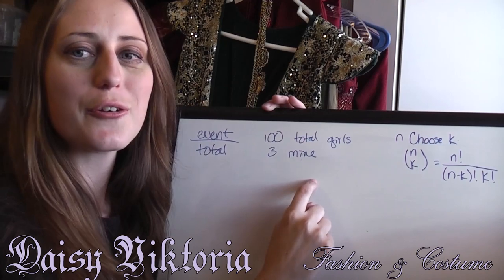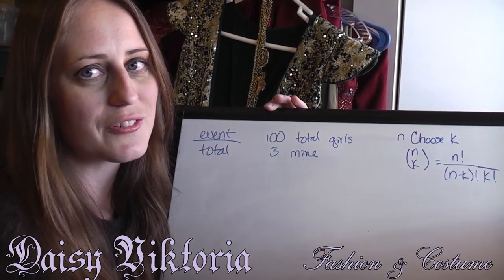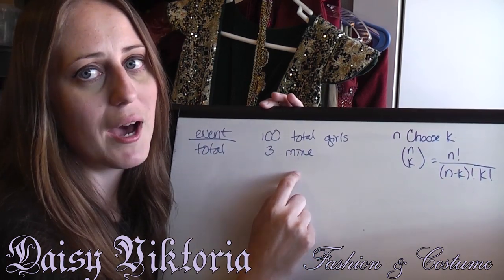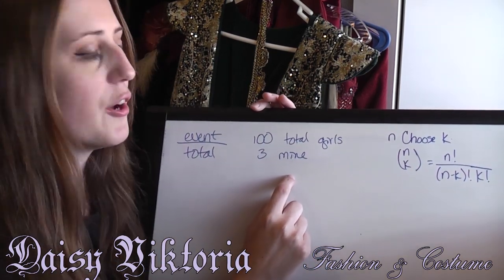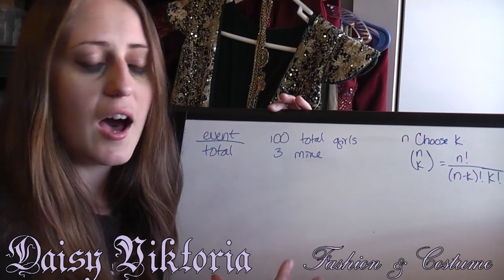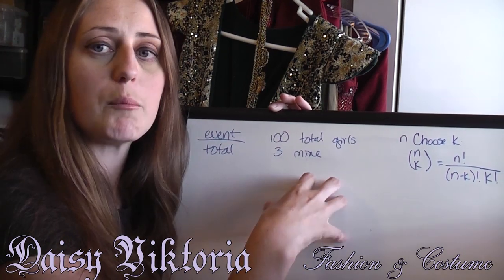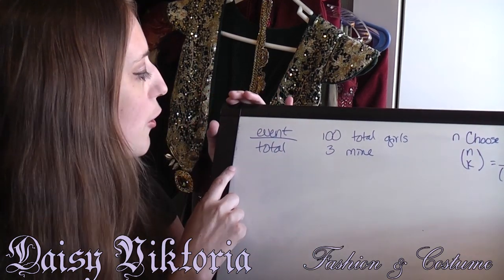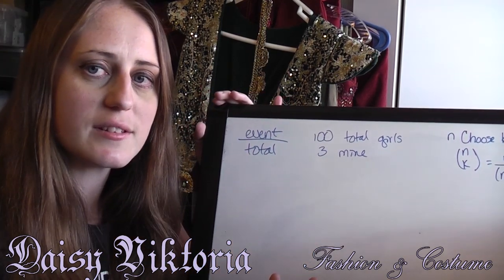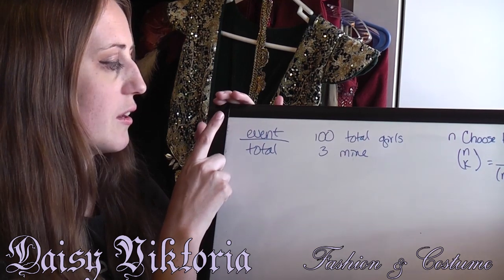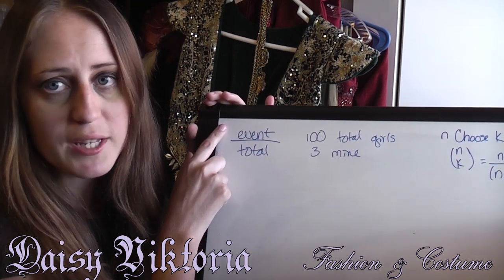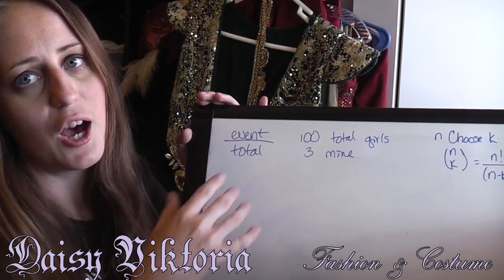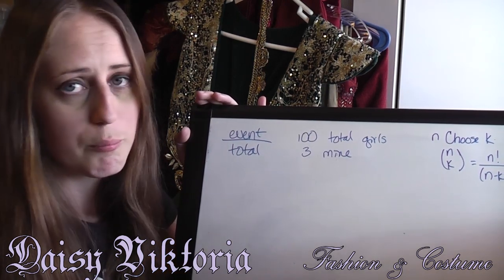There are 100 total girls, we're assuming — there could be a slightly different number, but we just want something to calculate. Three of these girls are my girls, so I want to know the chances of my girls being in the top 20. In order to find that out, I need to know the total number of combinations that give me my girls in the top 20, and I also need the total number of combinations to choose 20 girls out of 100.